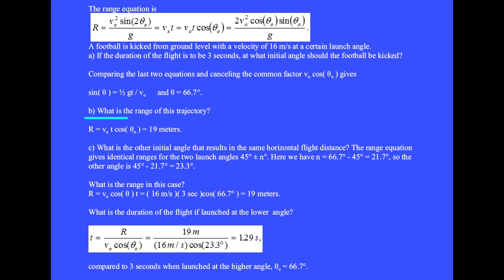Question B: What is the range of this trajectory? Using this portion of the string of equations, the range R = v₀ × t × cos(θ₀). The arithmetic shows you get 19 meters.